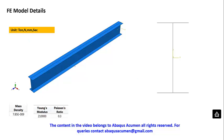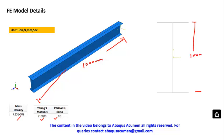The example we are going to use is an I-section, 1000 mm long. We will use units of Newton, millimeter, and seconds. The material properties are density, Young's modulus, and Poisson's ratio. The section profile has a depth of 100 mm and a width of 50 mm. Let's quickly model this example.